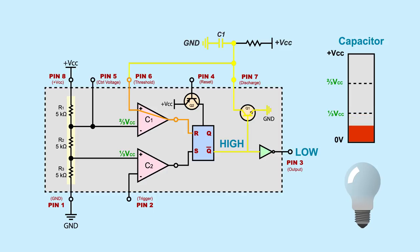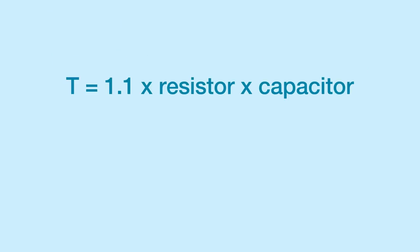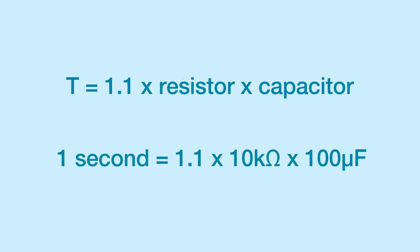This also causes the capacitor to short to ground through pin 7 and discharge down. The time it takes for the capacitor to charge up and reset the 555 can be calculated using this equation. Time equals 1.1 times the resistor value times the capacitor value. So to get the circuit to reset after about one second, I can use a 10 kilo-ohm resistor and a 100 microfarad capacitor.